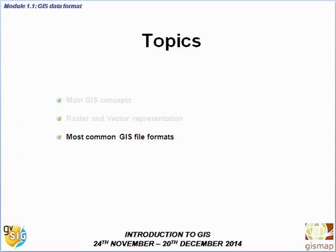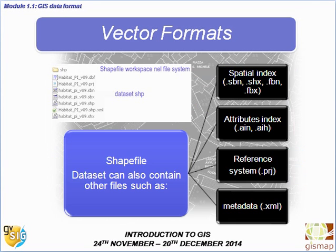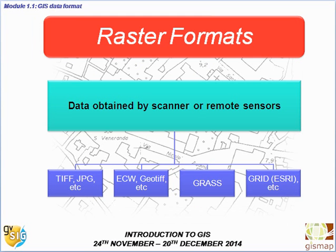The last topic covers the most common GIS file formats. For vector formats, the most common is the shapefile, which is a set of files containing at least three files stored in a directory: .shp, which stores vector geometry; .dbf, which stores attributes; and .shx, which stores the spatial index. Additional vector formats with different extensions must be named the same way and stored in the same folder. Raster formats are data obtained by scanners or remote sensors and mainly include TIFF, JPEG, GeoTIFF, GRAT, GRASS, or the GRID format that belongs mainly to ESRI.